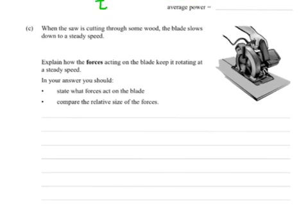Part C. When the saw is cutting through some wood, the blade slows down to a steady speed. Explain how forces acting on the blade keep it rotating at a steady speed. In your answer, you should state what forces act on the blade and compare the relative sizes of the forces. This is too much. It's giving us too much information, making it almost too easy.